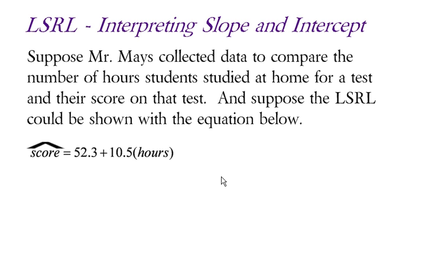When you find a least squared regression line, you're eventually going to be asked to interpret the slope and interpret the intercept. You need to know the context of the problem. If you find these numbers, it's not good enough to just find the right numbers or equation. You have to know what these numbers mean.